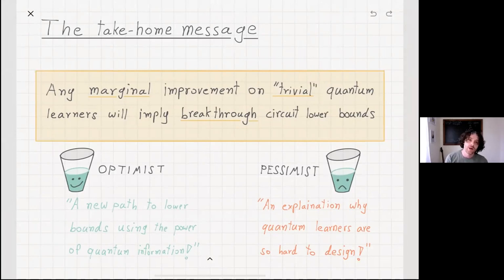So I'd like to start with the take-home message, the most important thing that I want to communicate during this talk. That any marginal improvement on trivial quantum learners will imply strong breakthrough circuit lower bounds in complexity theory. Now, it really depends on which type of person you are.